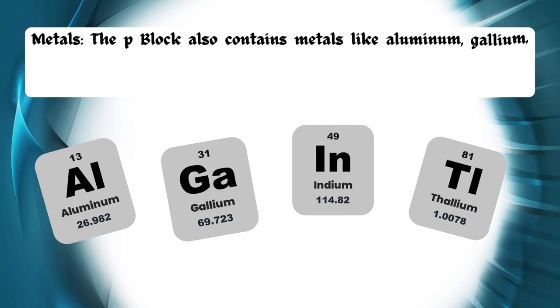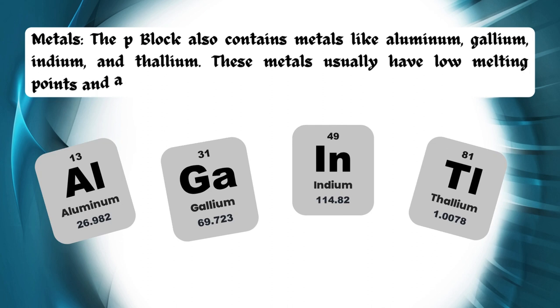Metals: the p-block also contains metals like aluminum, gallium, indium, and thallium. These metals usually have low melting points and are quite soft.